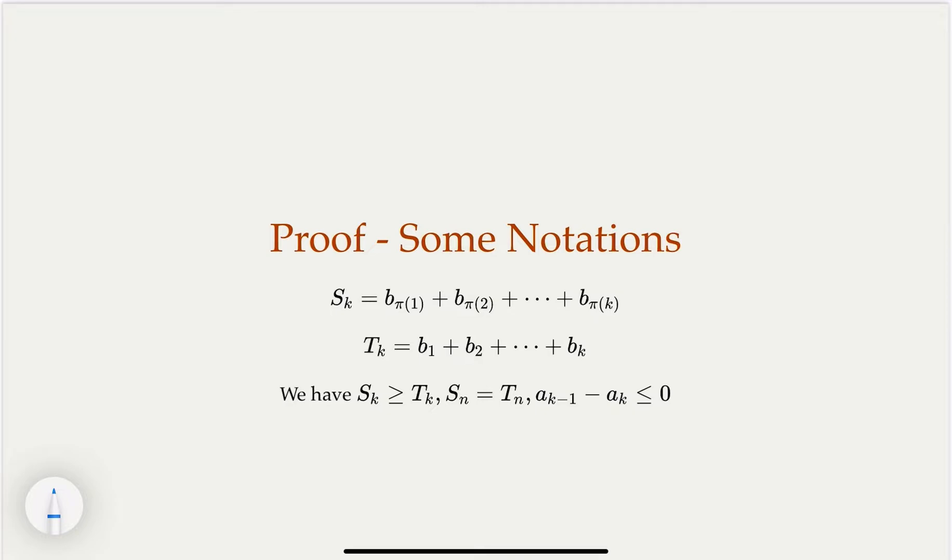Before we do that, we're going to introduce some notations for easy reasoning. Here we have T_k, which is the first k terms of the sorted sequence. Remember we assume b_i is in increasing order. In other words, T_k would be the sum of the k smallest.